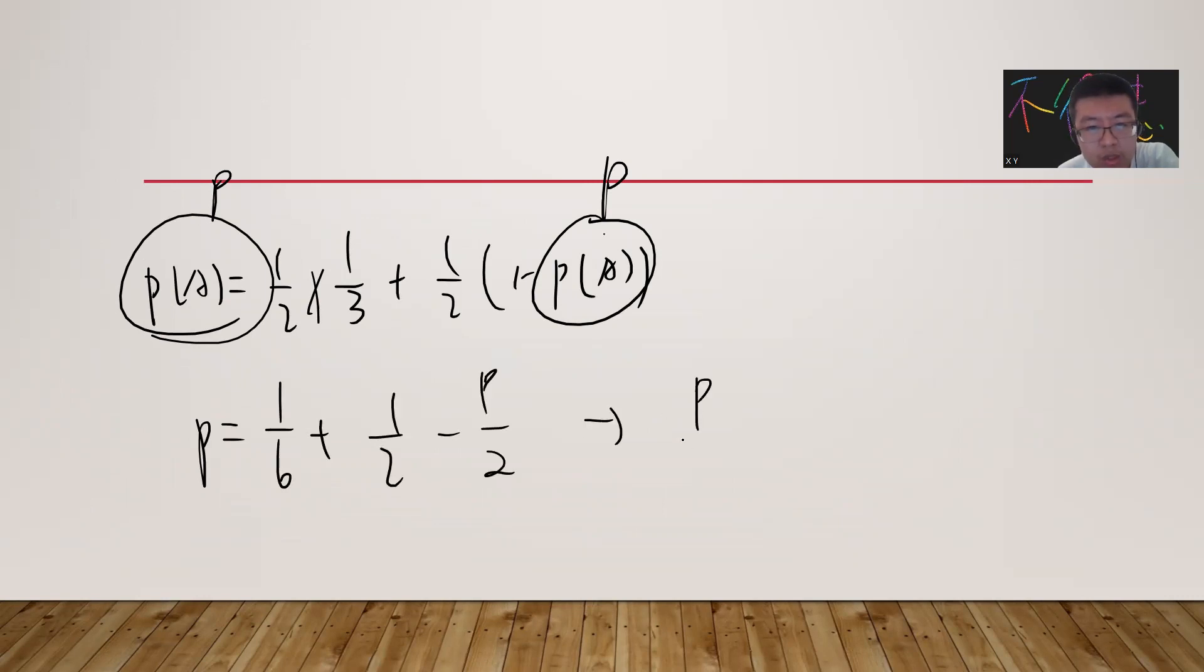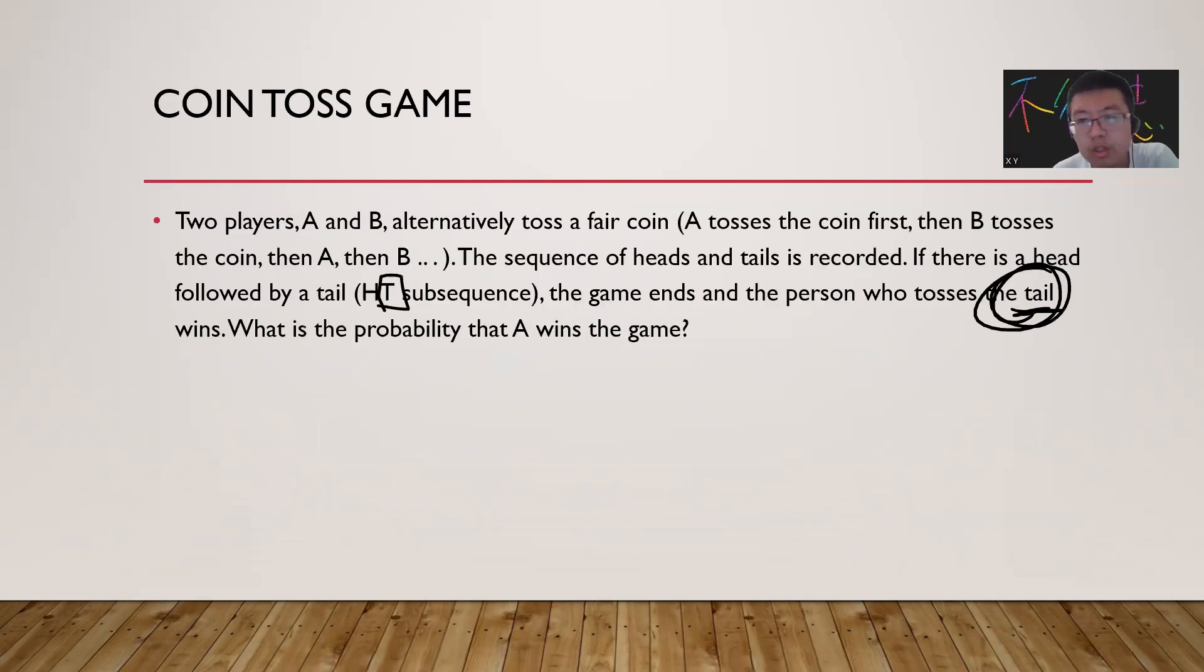Let's denote this by P. So P equals one divided by six plus half minus P divided by two. You get three P divided by two equals four divided by six. So P equals four divided by nine. This is the probability that A wins. See you guys next video.